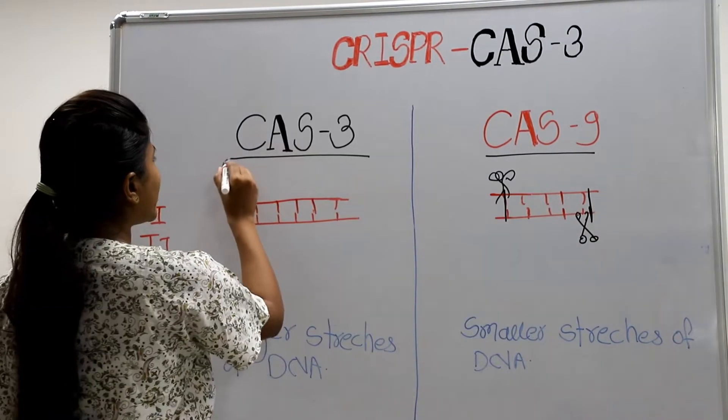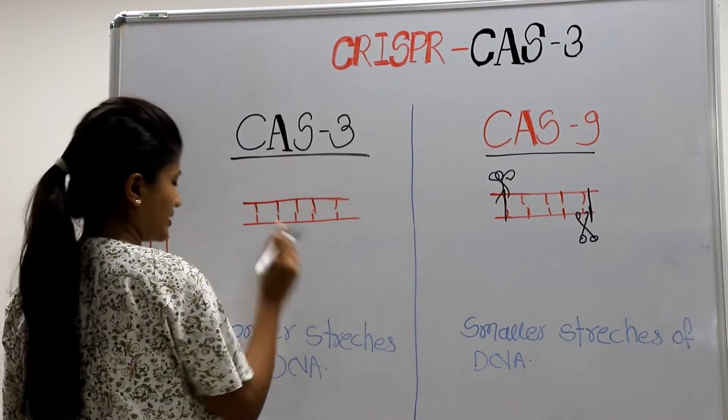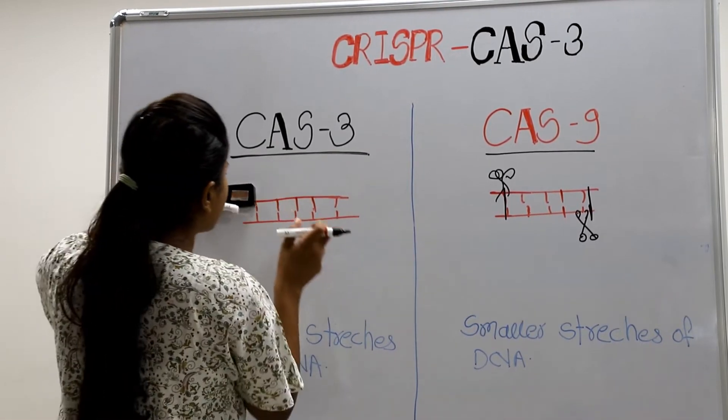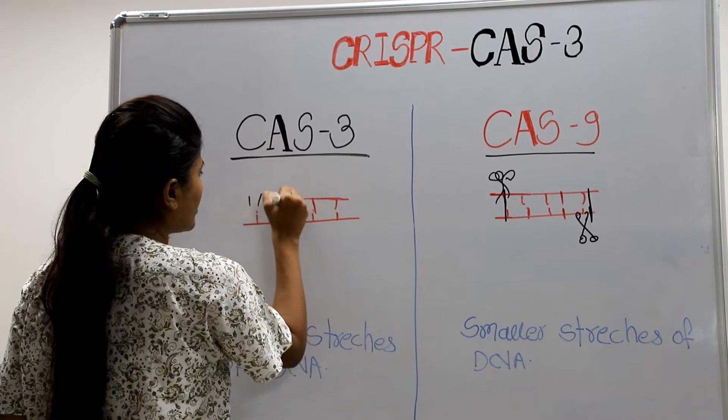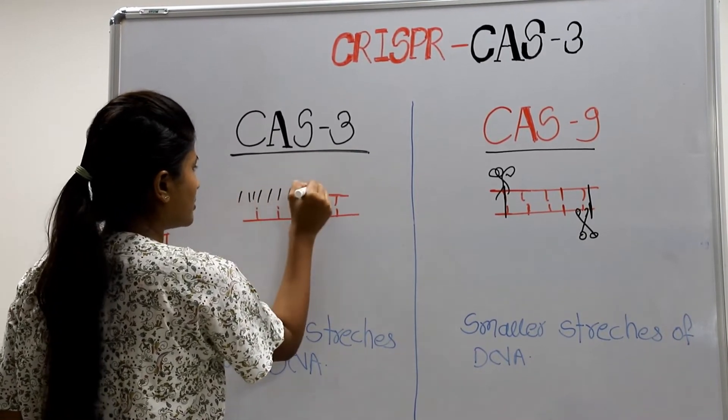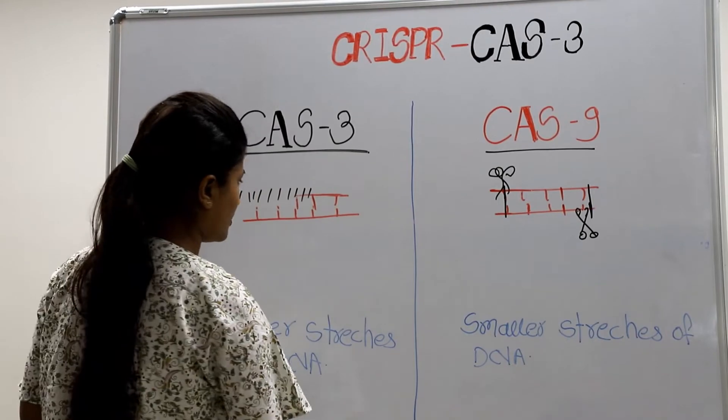In case of Cas3 system, the Cas3 enzyme chews it like a shredder, means into small pieces.